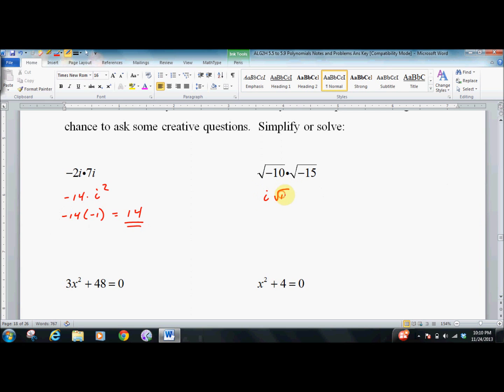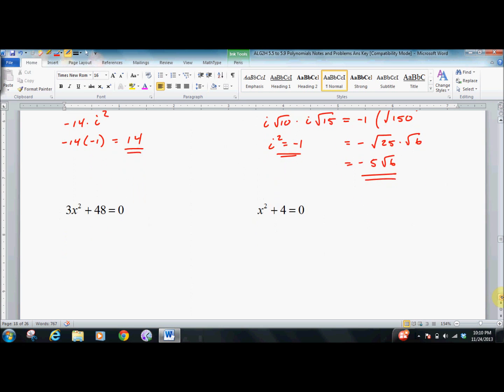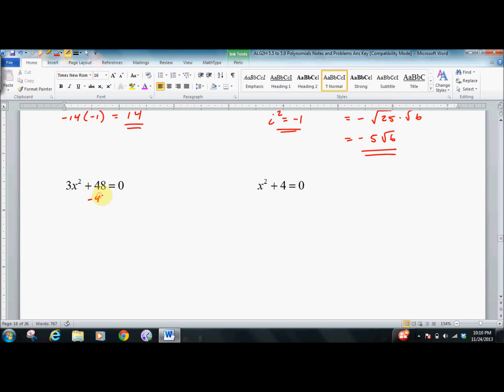You have to say it's i times square root of 10 times i times square root of 15. So you get i squared, which is negative, square root of 25 times square root of 6. You can try some more on your own. I'll go through them. Pause if you don't want me to do the solution right away.